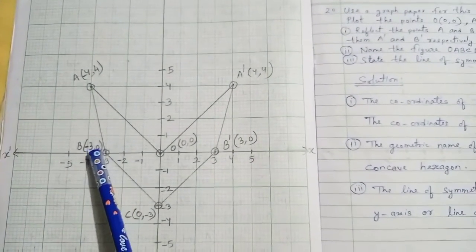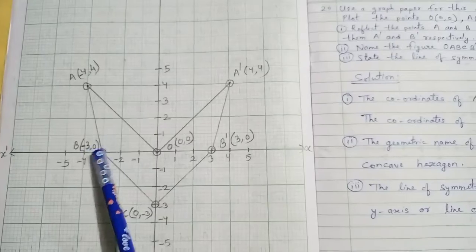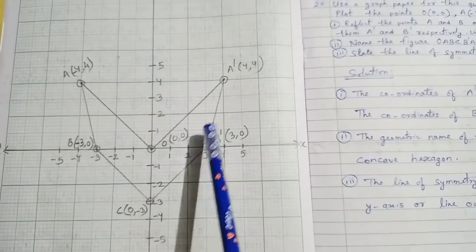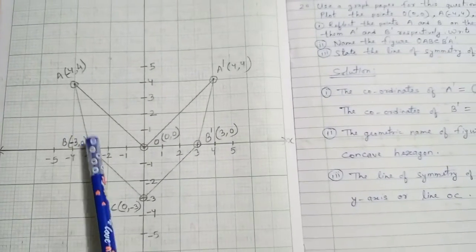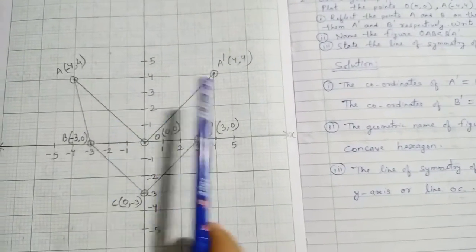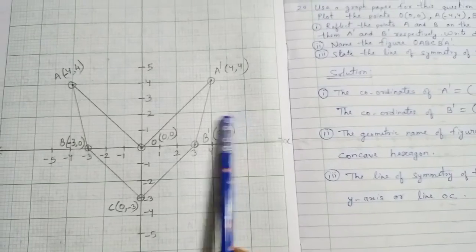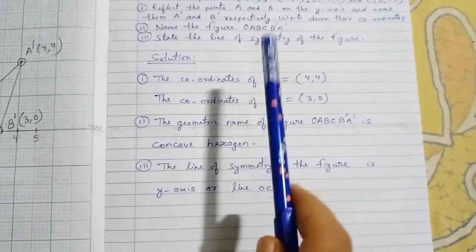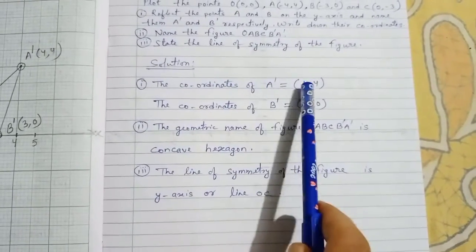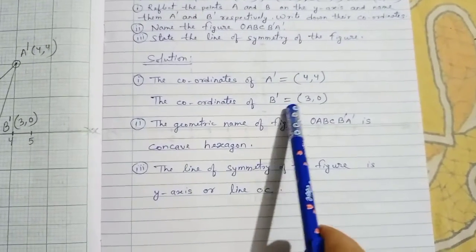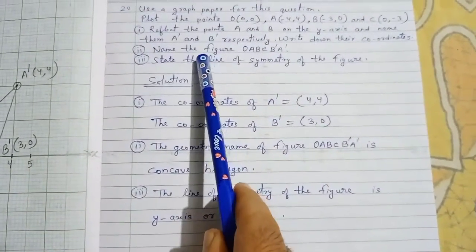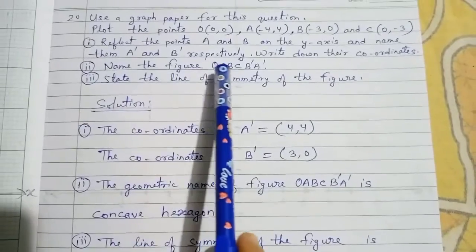B(-3,0) reflected in the y-axis becomes B'(3,0) — 3 on the x-axis and 0 on y, plotted here. Both A and B have jumped the y-axis. Write the coordinates: A dash is (4,4) and B dash is (3,0).